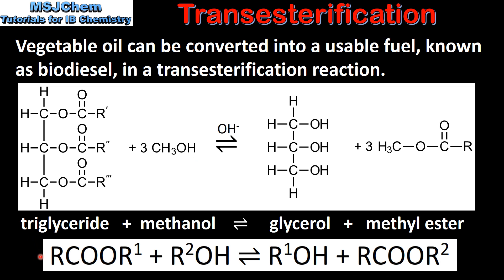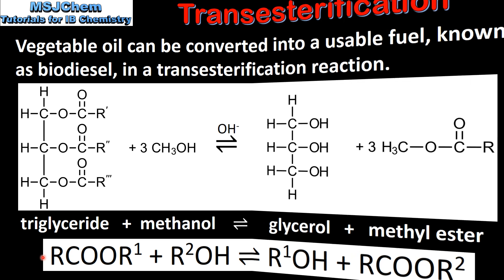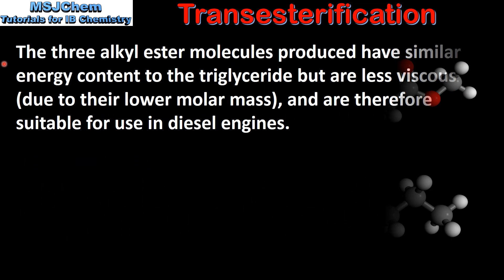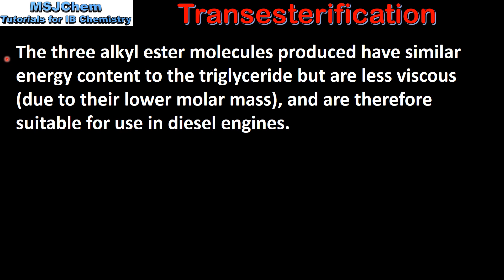Here we have the general equation for the reaction. Next we will compare a biodiesel molecule with a diesel molecule. As you can see they are both quite similar, each consisting of about 16 carbon atoms. However, the biodiesel molecule has an ester group which is bonded to a methyl group, hence the name methyl ester. The three alkyl ester molecules produced have similar energy content to the triglyceride but are less viscous due to their lower molar mass and are therefore suitable for use in diesel engines.